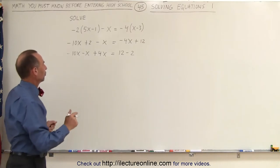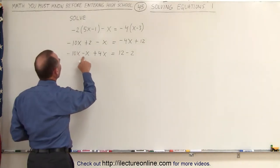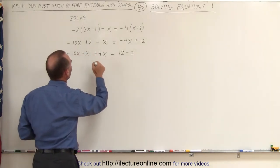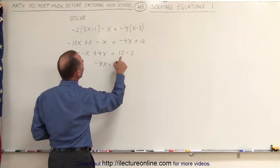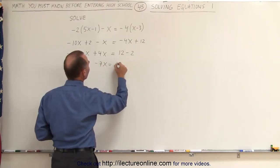Now we can combine like terms. Minus 10, minus 11x, plus 4, that would be minus 7x equals 12 minus 2, which is positive 10.